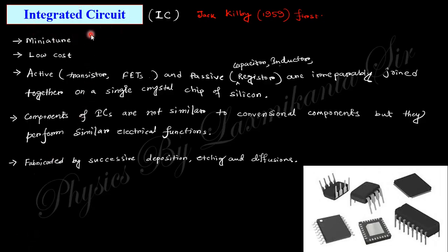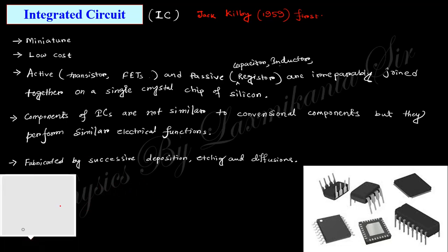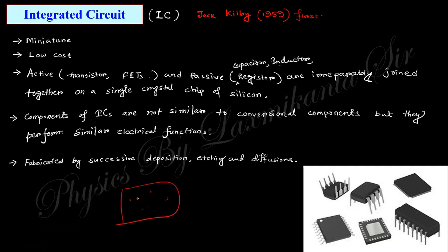What do we mean by IC? IC means integrated circuit — a large number of components are integrated, meaning accumulated in a small region. You can see this type of image — this is the IC. Even in a small calculator there is an IC. Using an IC, you can accumulate a large number of components within a small region, so component density is high and this reduces the size of the device.